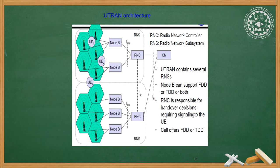Now we have seen the UMTS architecture. Within that diagram there is the UTRAN block. This is the detailed architecture of UTRAN. It has RNS (Radio Network Subsystem) and RNC (Radio Network Controller), as well as Node B. All UEs are connected to Node B. Node B supports FDD or TDD or both, and is then interfaced with RNC. RNC is connected to the core network. UTRAN contains several RNSs. RNC is responsible for handover decisions requiring signaling to the UE, and each cell offers FDD or TDD.